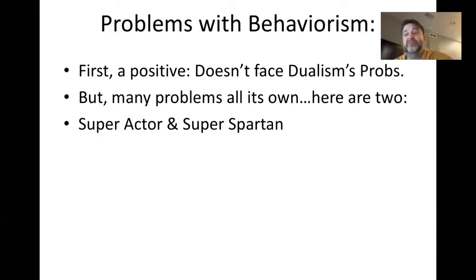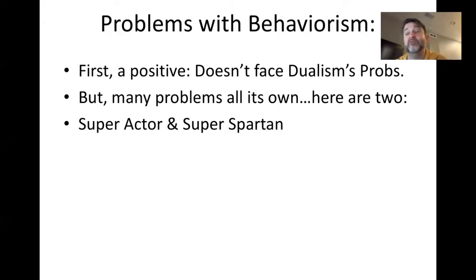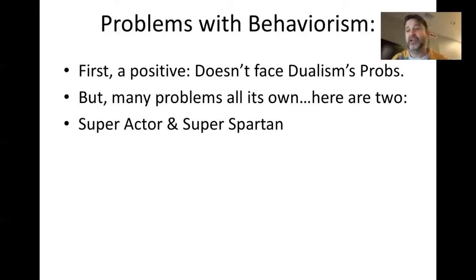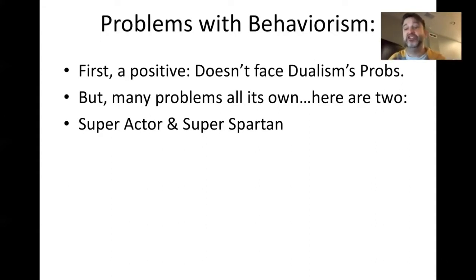We can also imagine a reverse case: the super Spartan warrior trained to repress all outward signs of being in pain. He gets a spear thrown through him and he's in absolute pain, but because he's so Spartanic, he doesn't show any of the behavior — he just stands there. These challenges matter for logical behaviorism because Ryle says when we talk about mental states, what we're actually talking about is behaviors. So if that were the case, it should be inconsistent to think of someone being in pain but having none of the behaviors — like imagining a square circle.